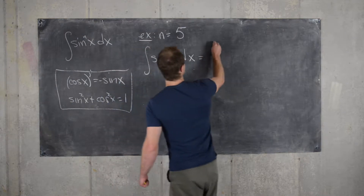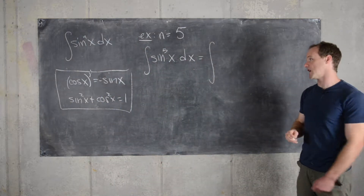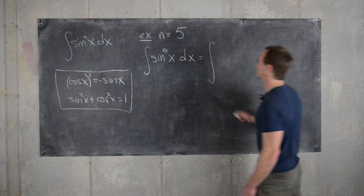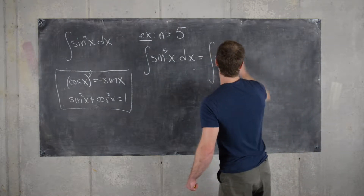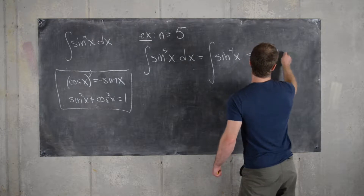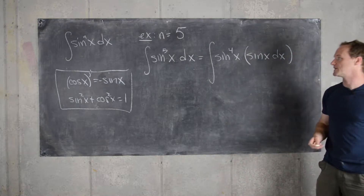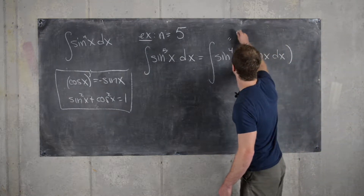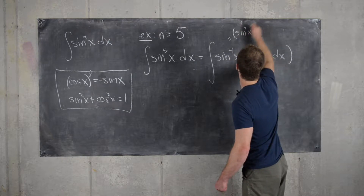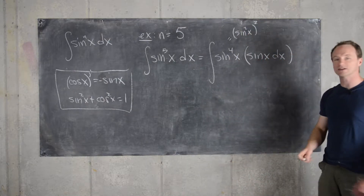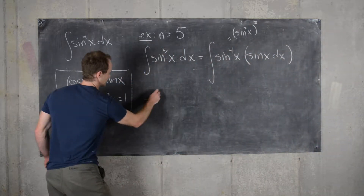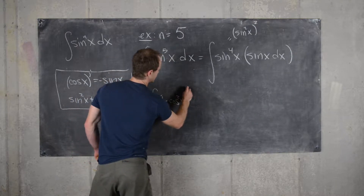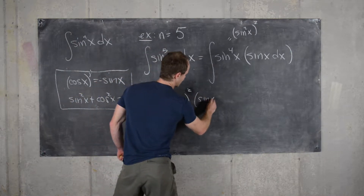We'll save one of the sine factors to pair with dx for the substitution, and write the rest using the trig identity. So let's write this as sine to the 4th x times sine of x dx. We can take the sine to the 4th power and write it as sine squared, squared — that is, sine squared of x, all squared. We'll rewrite sine squared using the trig identity, giving us 1 minus cosine squared of x, the whole thing squared, times sine of x dx.